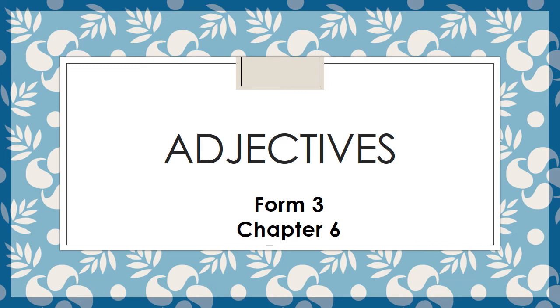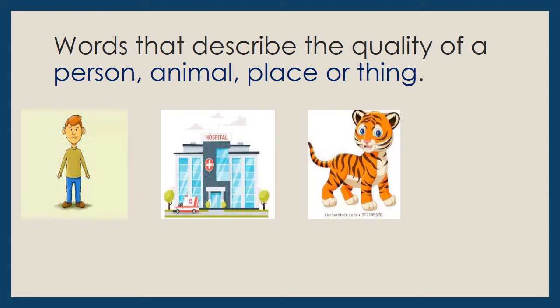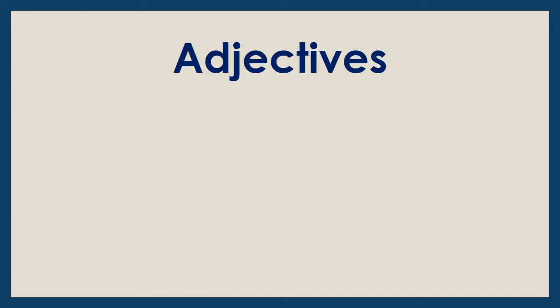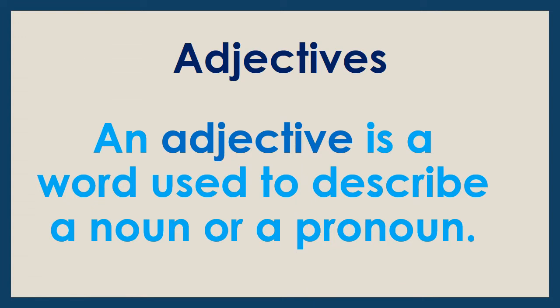Good morning children. Today we are going to start chapter number 6, that is adjectives, or we can call them describing words. Words that describe the quality of a person, animal, place or thing are called adjectives. Or we can say adjectives tell us more about a person, place, animal or thing. An adjective is a word used to describe a noun or a pronoun.